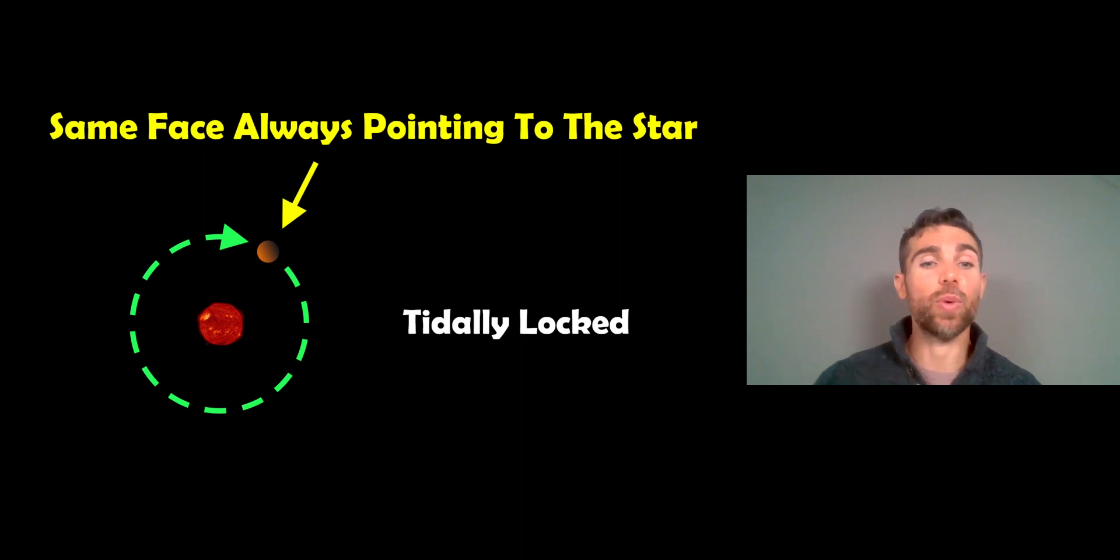That means the same face will always face towards the star. So it will rotate once on its axis in the same time period it takes to go around the star, which is what we will then refer to as tidally locked. And each night, you can look up in the sky and you can see our moon, that is tidally locked. That will always show the same face facing towards us as well. So when planets are very close to them, tidal locking is quite a common thing.